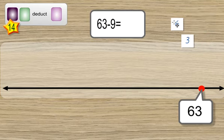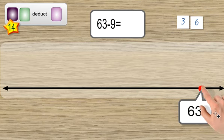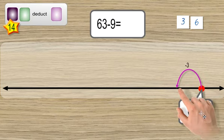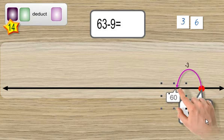So, let's take away the 3 from 63 first of all. 63 subtract 3, what do we end up with? 60. So let's show that here. 60.